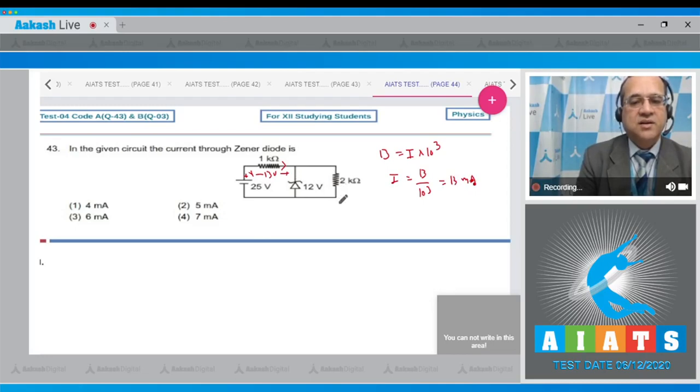Now look at this circuit by KVL. If it is 12 volt, the potential drop here also should be 12 volt. So 12 volt equals the current through this resistance multiplied by the resistance 2 times 10^3. Therefore the current in this would be 12 divided by 2 times 10^3, which equals 6 milliampere.